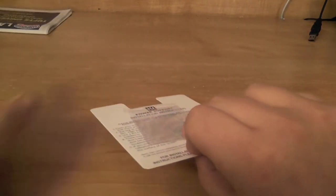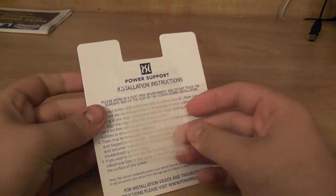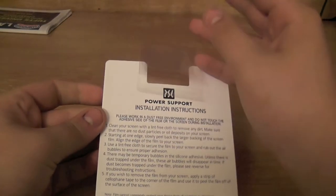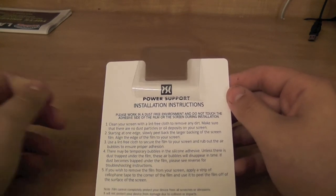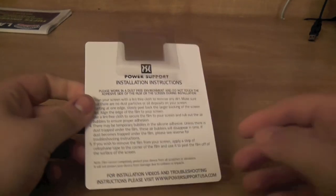So inside the box, that's it. You have the two screen protectors which are in here and it says clean your screen with lint free cloth to remove dirt. I've already cleaned the device.